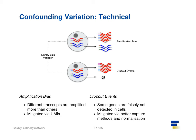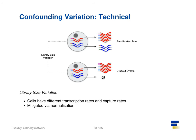Confounding technical variance appears in three forms: amplification bias, dropout events, and library size variation. Amplification bias can be mitigated by UMIs as demonstrated before. Dropout events give rise to the prevalent zeros in the count matrices, and their effect can be reduced by using clever normalization techniques such as the pooling method shown previously, as well as by using better sequencing methods. Library size variation arises for a variety of different reasons, but is the main source of variation within an analysis. Like bulk RNA-Seq, this is reduced with good normalization methods.